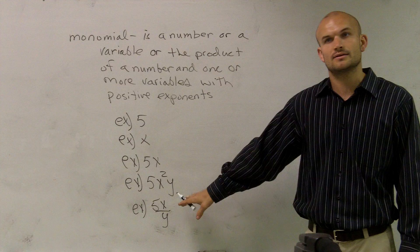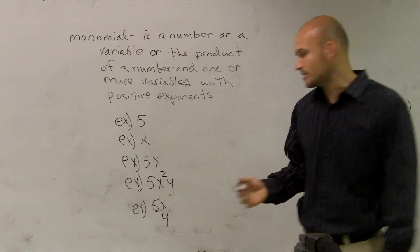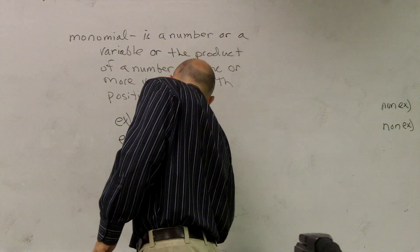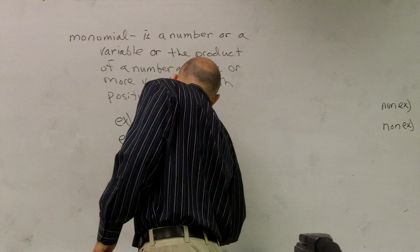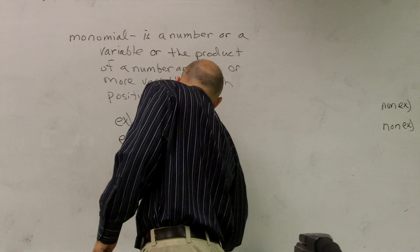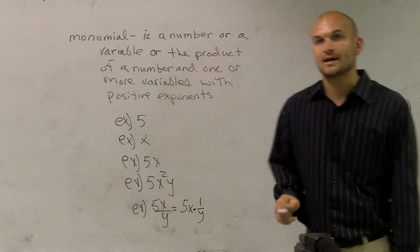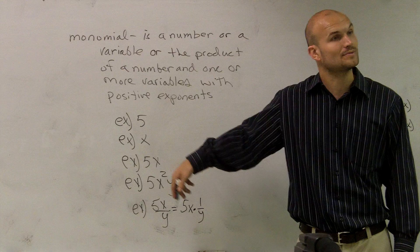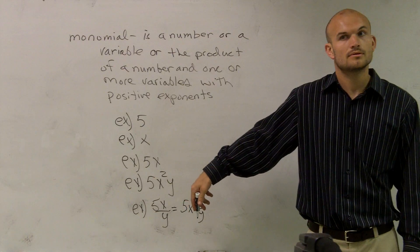Remember, we can always write a division. It's just another way of writing, you know, a multiplication. This is the same thing as 5x times 1 over y. So it still can be rewritten as a multiplication problem.